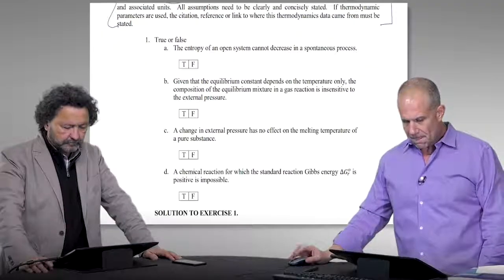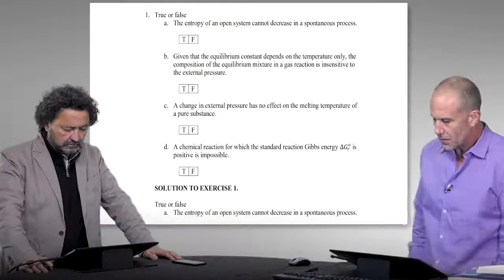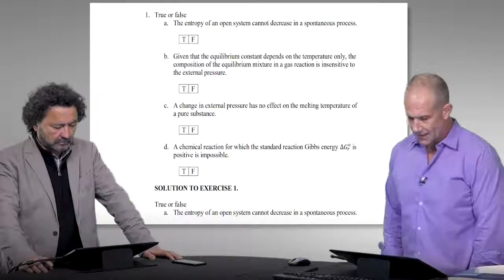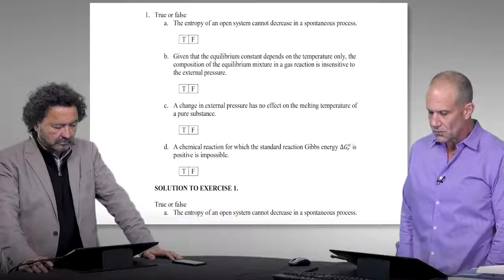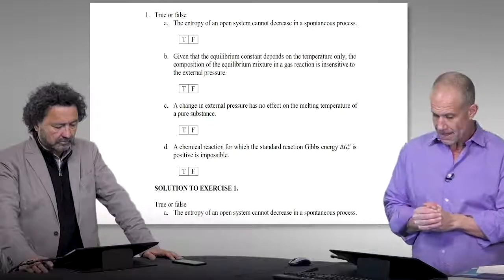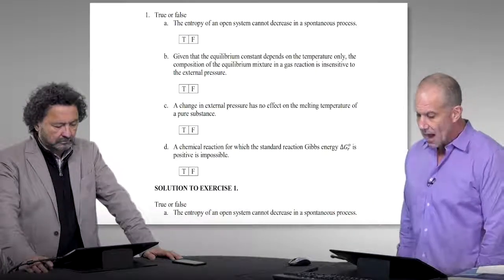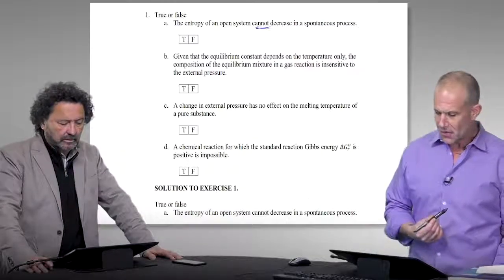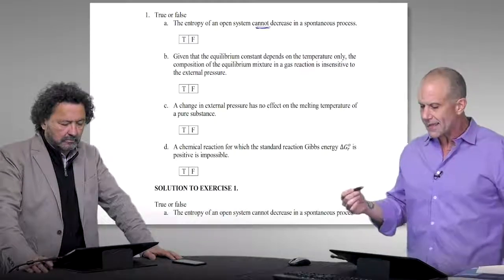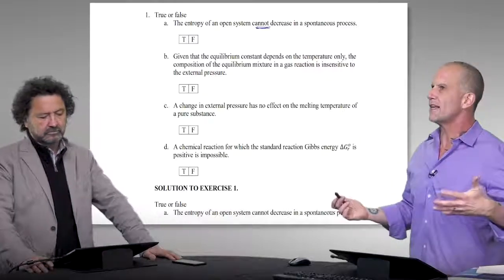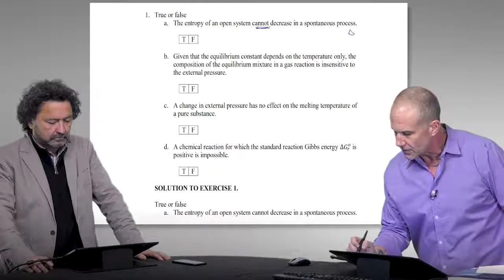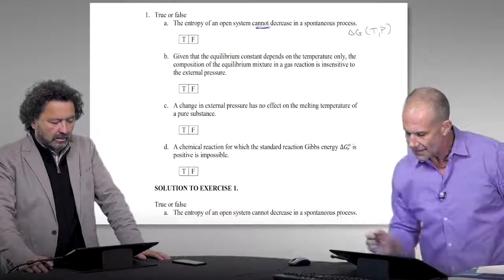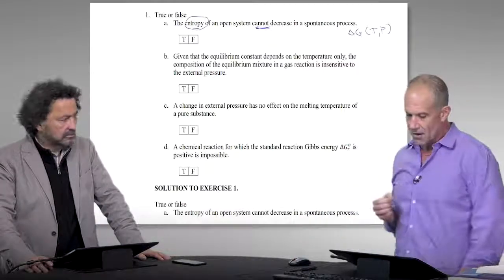The first question is really looking conceptually at some ideas — the main part of this exam is on chemical and phase equilibria in systems. The first question looks at things from a conceptual standpoint. 'The entropy of an open system cannot decrease in a spontaneous process.' Asking this is so important because conceptually understanding spontaneous processes — what runs to my mind is where is delta G in a constant temperature pressure environment. But you're asking specifically about something with the second law, which is entropy.